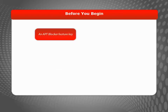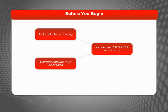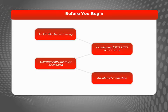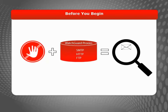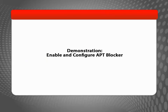Before you start working with APT Blocker, make sure you have these items. If you don't have an APT Blocker feature key, contact your WatchGuard reseller. You can use APT Blocker with the WatchGuard SMTP, HTTP, and FTP proxies to scan inbound email messages and files. If you haven't already configured one of these proxy policies, you can enable it when you configure APT Blocker. Once you have everything on hand, it's time to get started.